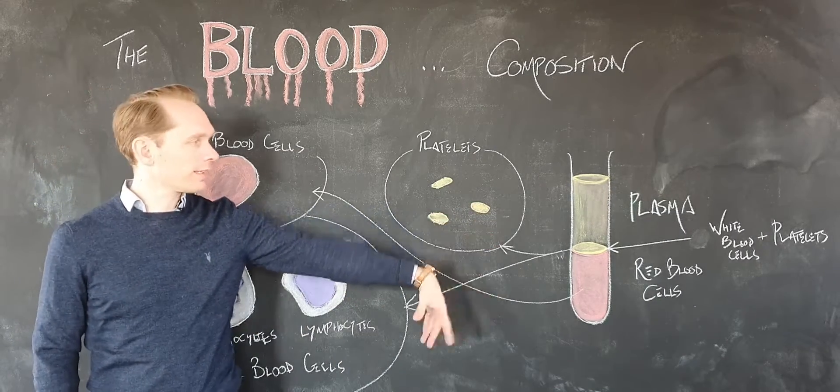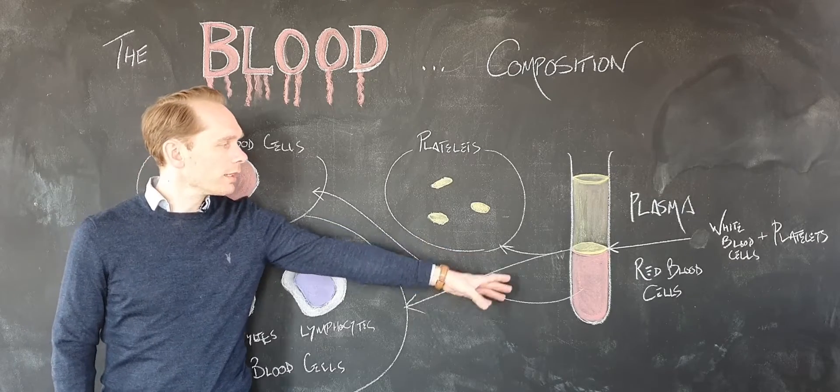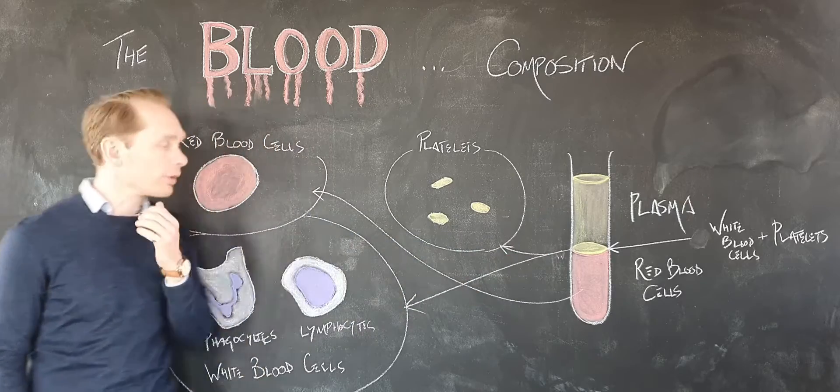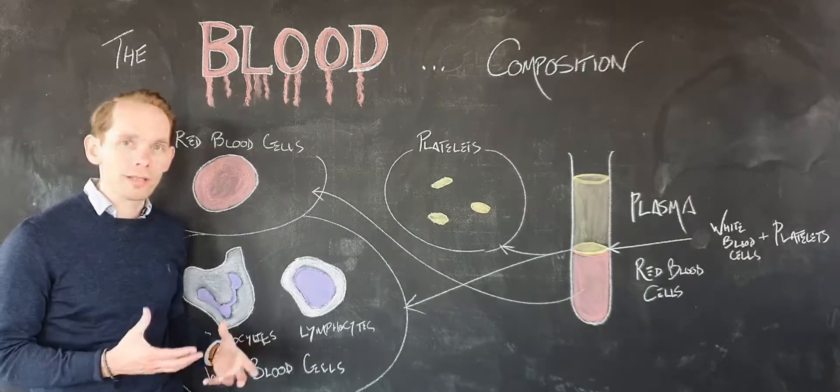If you took a sample of blood and spun it in a centrifuge, you'd find that only a very small proportion of the blood is actually white blood cells by mass or volume, but they are extremely important in their role.